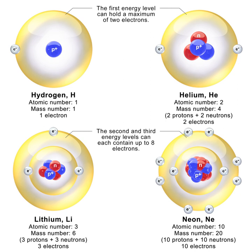The existence of stable clusters of four neutrons, or tetraneutrons, has been hypothesized by a team led by Francisco Miguel Marquez at the CNRS Laboratory for Nuclear Physics based on observations of the disintegration of beryllium-14 nuclei. This is particularly interesting because current theory suggests that these clusters should not be stable. In February 2016, Japanese physicist Susumu Shimura of the University of Tokyo and co-workers reported they had observed the purported tetraneutrons for the first time experimentally. Nuclear physicists around the world say this discovery, if confirmed, would be a milestone in the field of nuclear physics.